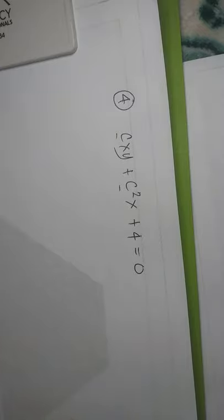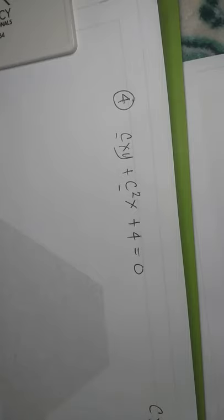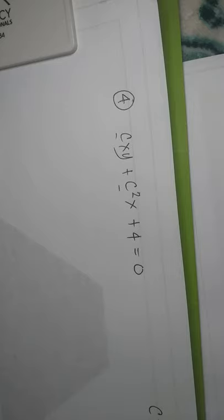So we have to differentiate once. Let's differentiate CXY. This is the differential of a product. Since C is a constant, we have C times the differential of XY. But what is the differential of XY?